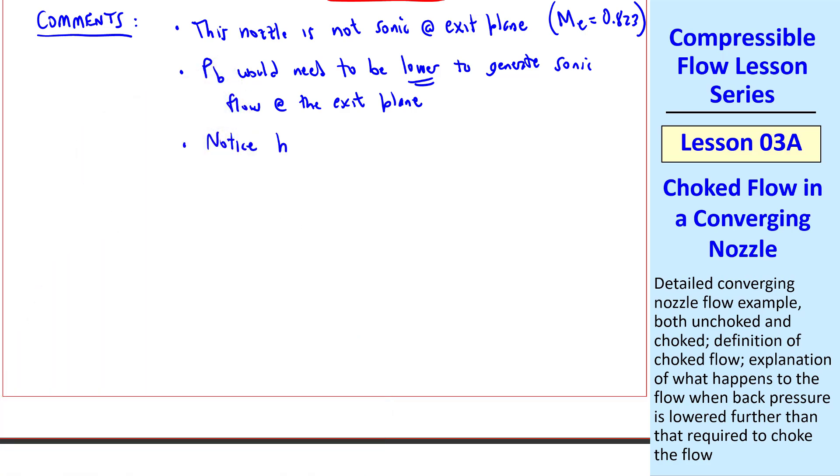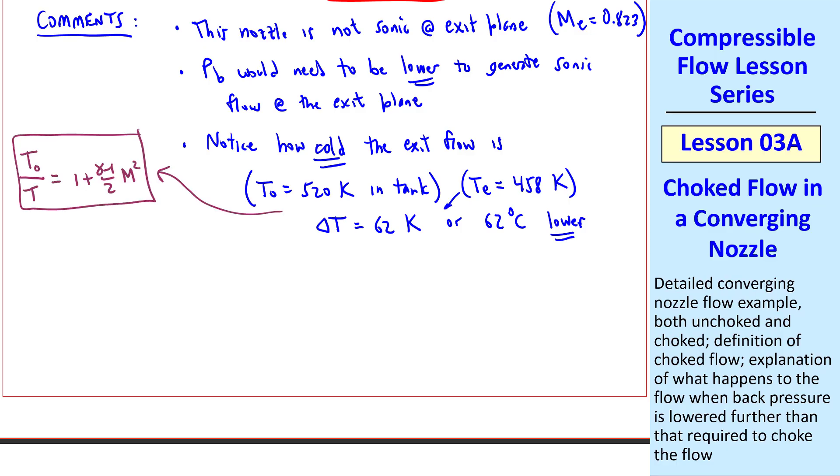My third comment is to notice how cold the exit flow is. T-naught is 520K in the tank, which is pretty hot, but the exit temperature is 458K, a difference of 62K, or since Kelvin is just a shifted centigrade scale, also 62 degrees C, and the temperature at the exit is lower. Why is this the case? Well, we can see from our temperature equation for isentropic flow, that for any M greater than 0, this term is positive, making T-naught bigger than T. The larger M is, the bigger the ratio, meaning T gets smaller for a given T-naught. And M increases from 0 in the tank to Me, so temperature continuously drops throughout the duct.